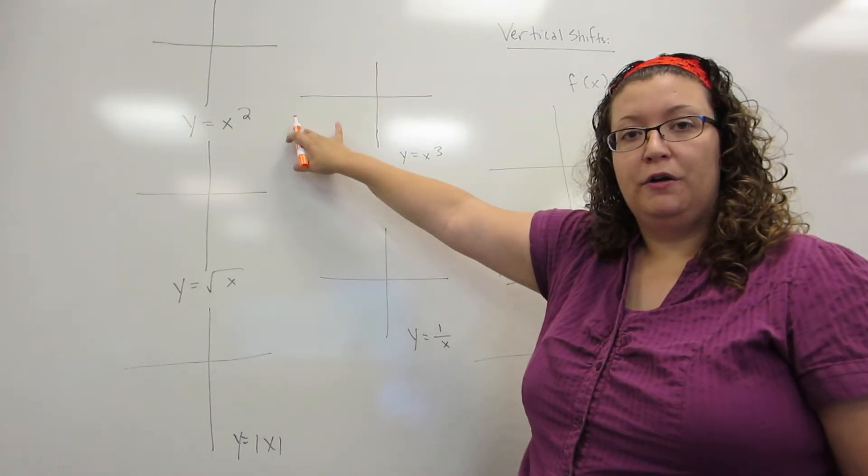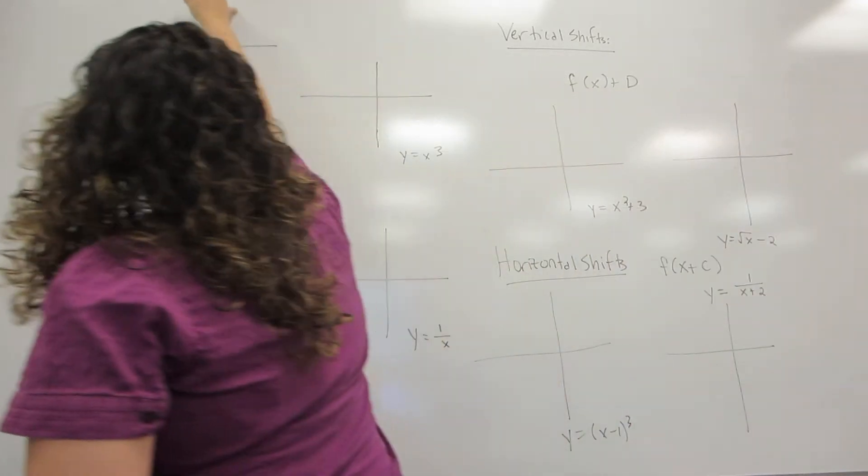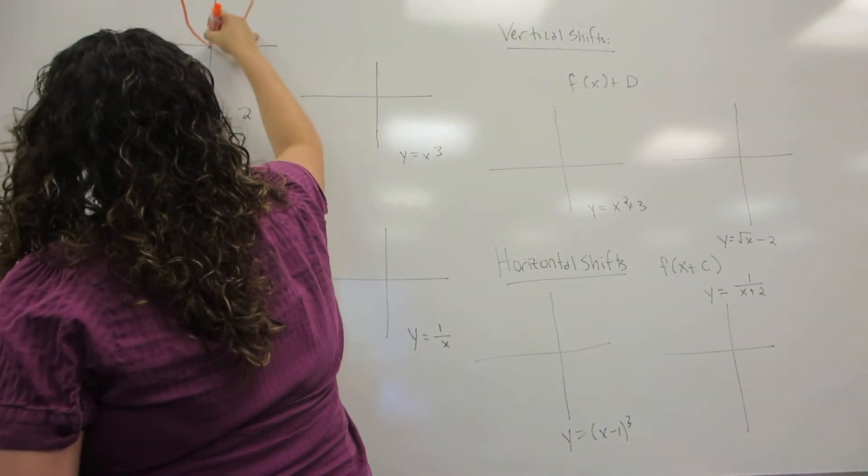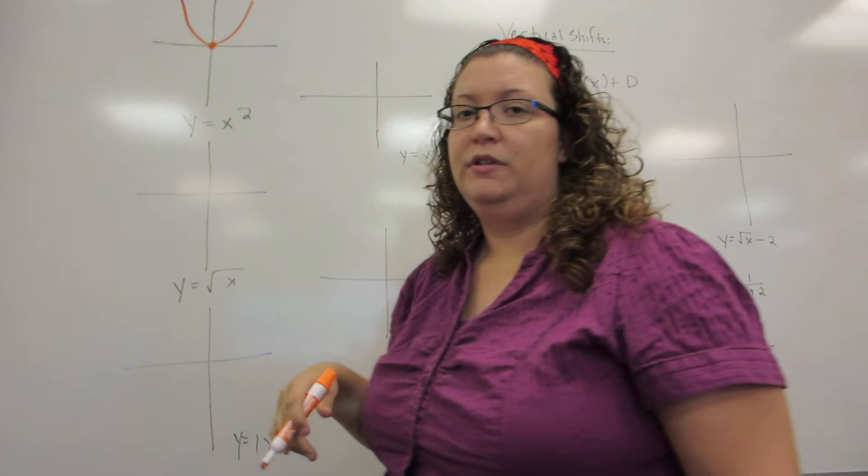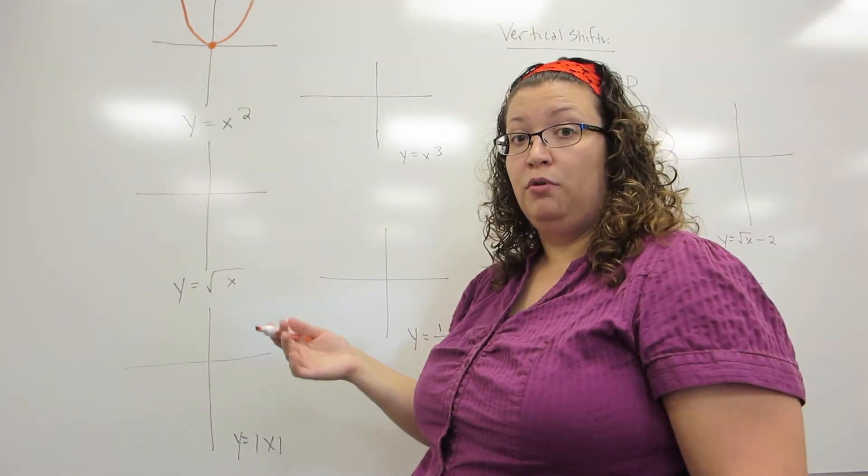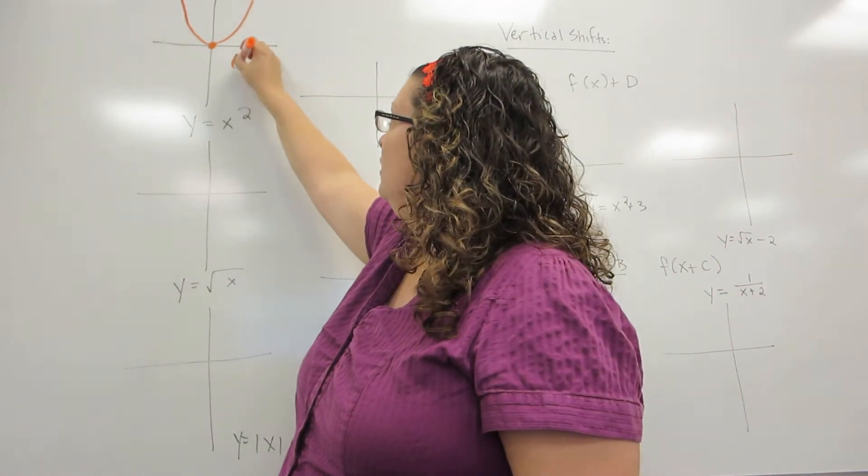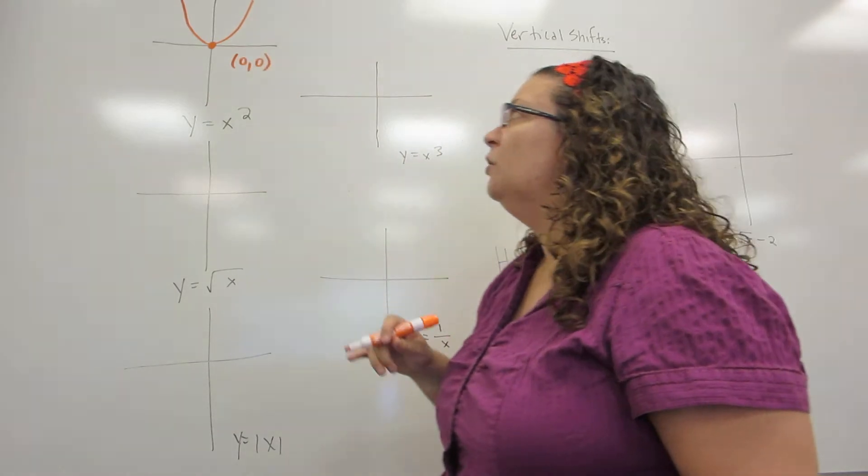Y equals x squared, as we already know, is a parabola, so it looks like this. We're going to note, for the purpose of this discussion, that the most important point is the vertex, obviously, which is originally at the origin.